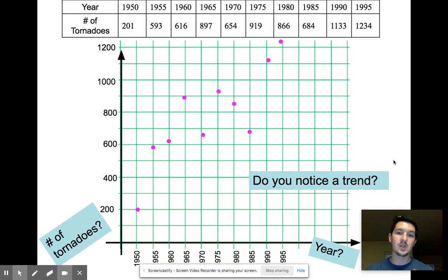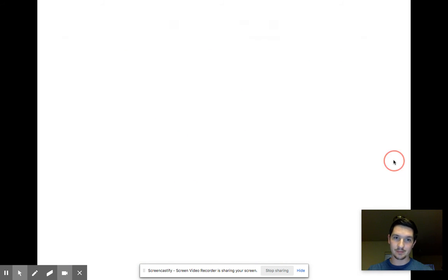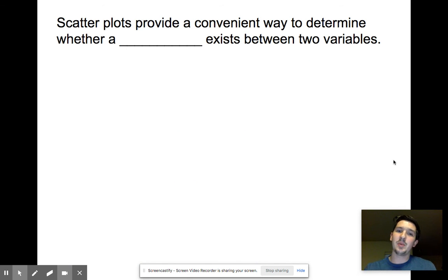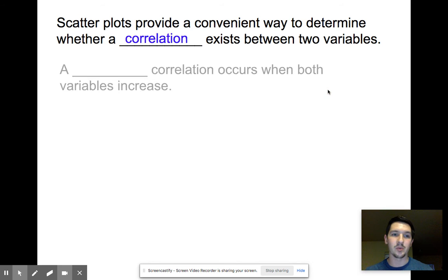And so yes, there is in fact a trend with these two categories. Scatterplots provide a convenient way to determine whether a correlation exists between two variables. I just used that word on that last slide. So in reality, correlation is telling us if there's a connection between the two variables.